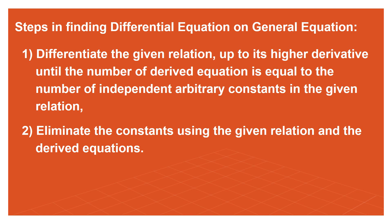For example, if there are three independent arbitrary constants in the general equation, we derive it three times — giving us four equations total: the original, first derivative, second derivative, and third derivative. We then equate those equations to eliminate all the essential constants.